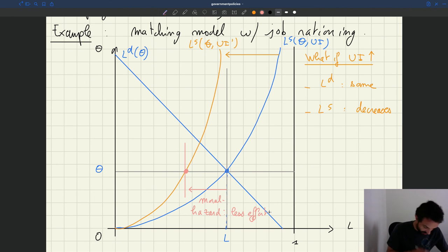And so in fact, we could label this employment level L prime. The fact that L prime is less than L, it's due to the fact that people search less.